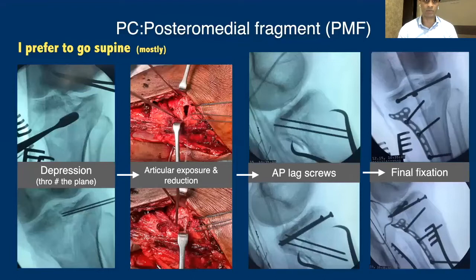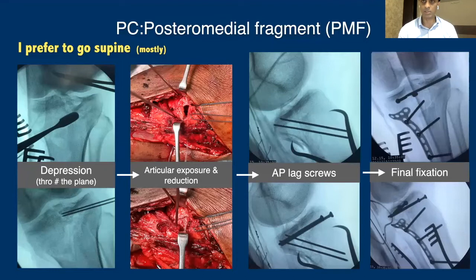How would I perform posteromedial fragment fixation? The first step is to address any postcentral depressions if present as part of the fracture pattern, then get your articular reduction — either based on the apex or, if articular access is required, expose it directly and reduce it. Then clamp your fracture and place anteroposterior lag screws at the subcondral level to secure your articular reduction. Once done, all these steps are performed in extension. You can then bring the leg into flexion to complete your fixation.